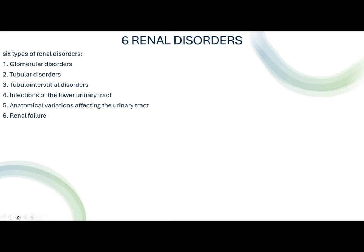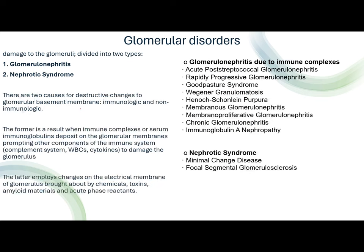There are six major types of renal disorders. Kindly take note of the six. We have: first, glomerular disorders; tubular disorders; tubulo-interstitial disorders; infection of the lower urinary tract; anatomical variations affecting the urinary tract; and renal failure. Let's start with the first group, the glomerular disorders.